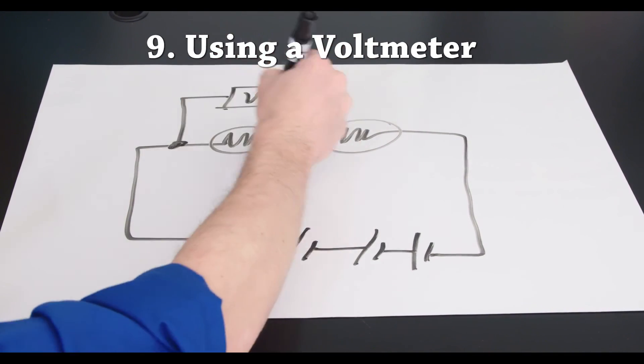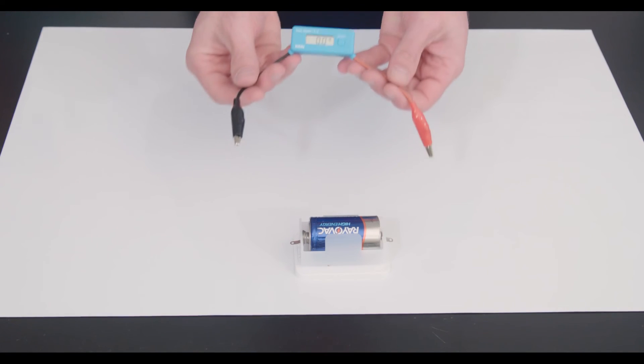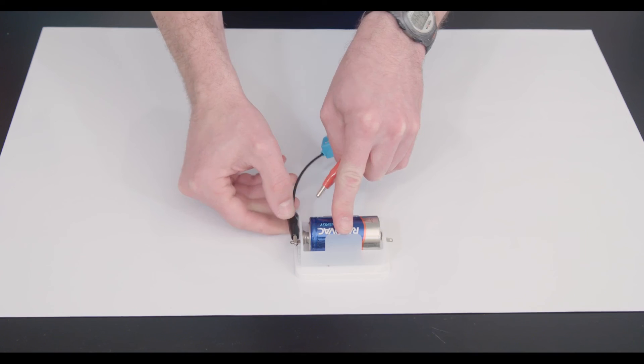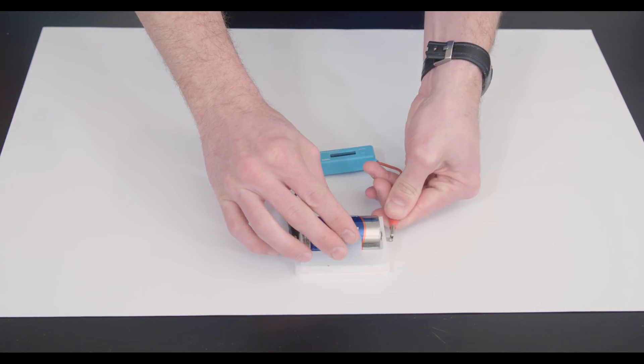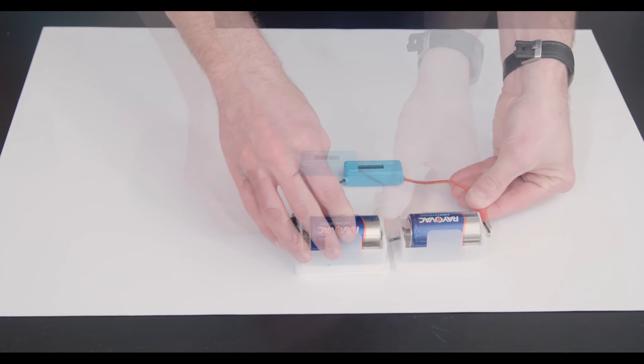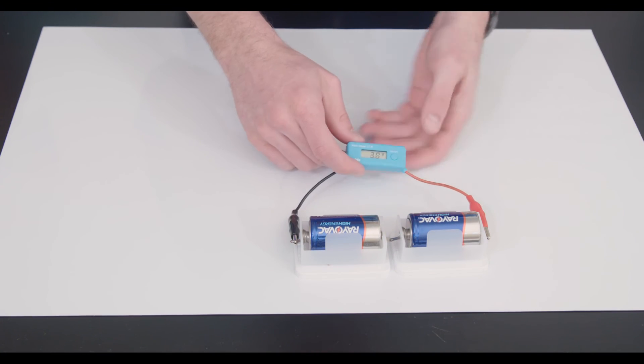Number nine: using a voltmeter. This blue circuit element is called a voltmeter. It measures voltage. Let me show you. Here this is a 1.5 volt battery like I've been telling you. And two of them makes three volts, almost exactly.